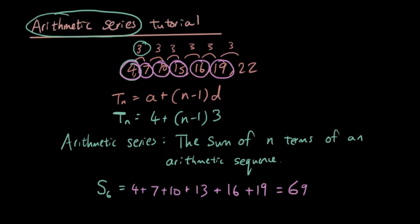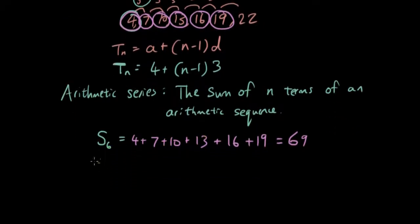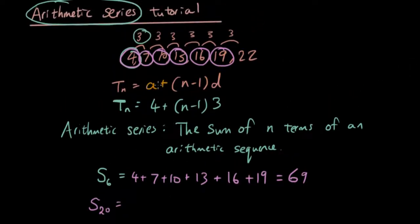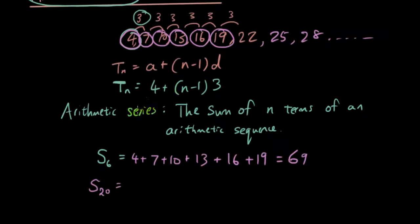Now what if I want to know the sum of the first 20 terms in this sequence? Well, what I will have to do if I want to do it the manual way is I have to figure out all the terms after this seventh number. I will have to go 25, 28 and I will have to keep going and get to the 20th one, and then I will have to add them all together. Now, what I am going to show you guys is a general formula for doing that because you don't want to do it the slow way.